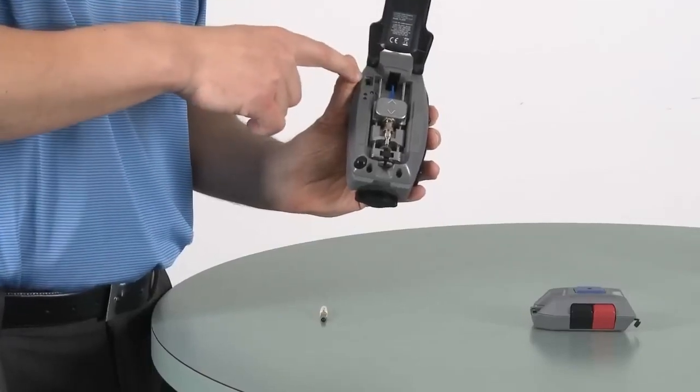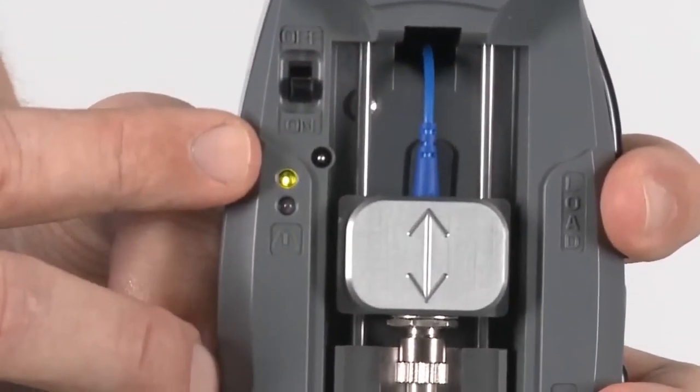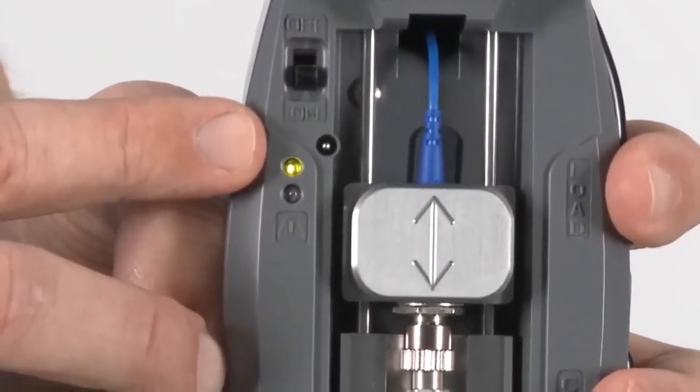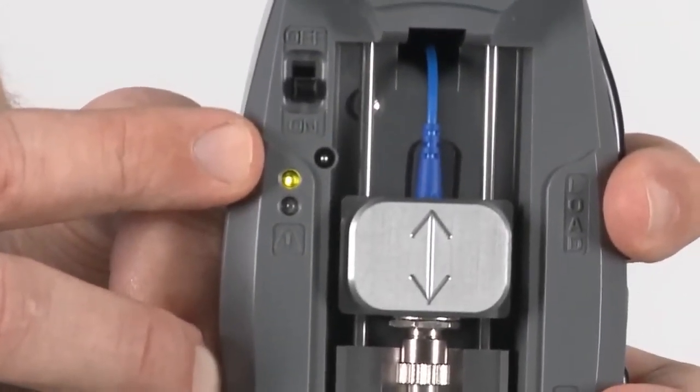This switch right here is the on and off switch. When you turn your tool on, you'll receive a solid green light indicating your tool is ready for use. If a flashing green light occurs or no light turns on, the tool is telling you that you need to replace the batteries.